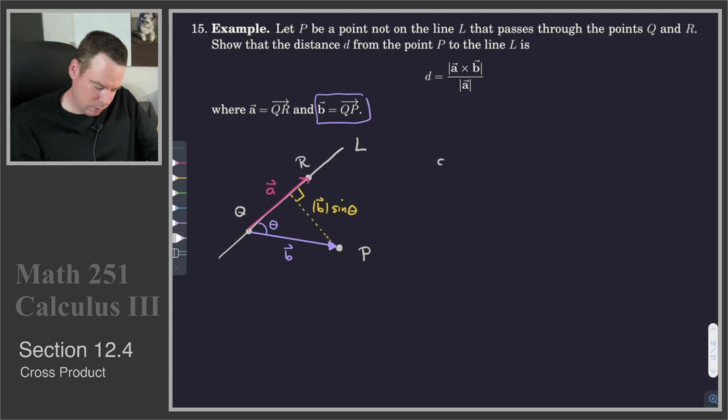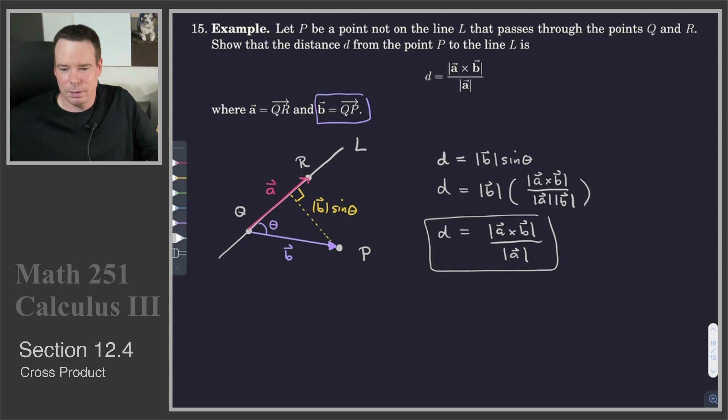So now we've got our diagram set up. We can go ahead and compute what we want. We want that length D. The length D is precisely the length of that orange line segment. So that's the length of B sine theta. What is sine theta? Well, sine theta is the sine of the angle between A and B. We already know that sine of theta is related to the cross product of the vectors A and B and their magnitudes. So this is the magnitude of A cross B all over A, the magnitude of A times the magnitude of B. And now I can cancel off the magnitude of B, top and bottom, and I get that the distance D is equal to the length of the cross product of A and B divided by the length of A.